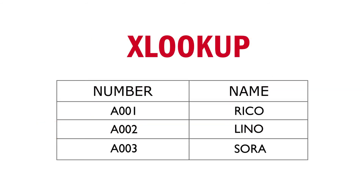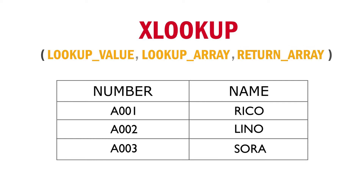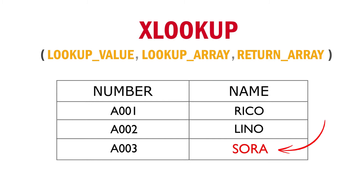For a simple example, if we want to return the name with serial number A003 in this table, we must first answer 3 questions. First, what do you want to look up? The lookup value is A003. Second, where do you want to search? The serial number column is the answer. Third, what to return if we find the value? In this case, we want to return the name. After answering these 3 questions, XLOOKUP can return the lookup values.